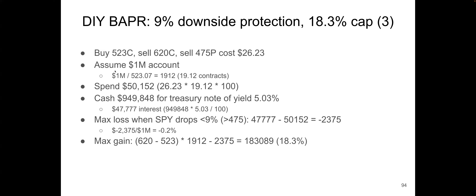So this is how you can reproduce a Buffered ETF yourself. Should you do it yourself? There are pros and cons. The pro is you don't need to pay the management fee, which is more than half a percent. The con is it's less flexible and easy to make mistakes. You also need a lot of money to accurately reproduce the exact portfolio. But the principle is the same. If you think the rate and protection offered by the Buffered ETF is good enough for you, you can just buy it — you don't need to have a million dollars. That's all for today, thank you.